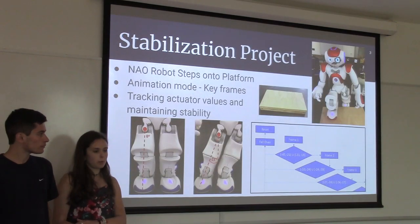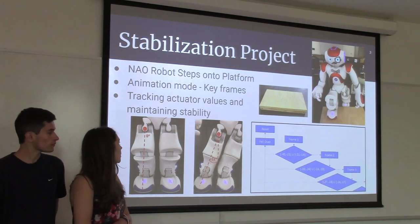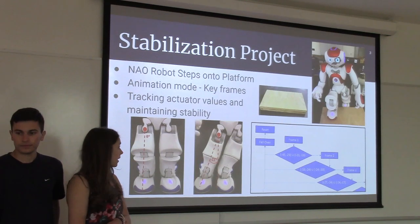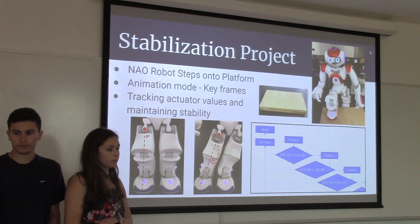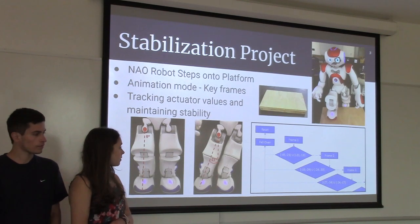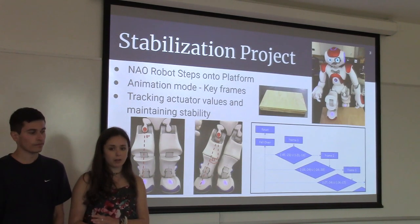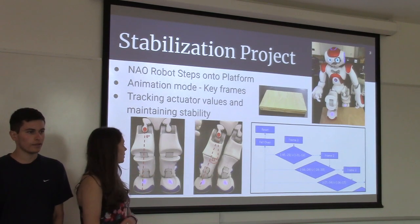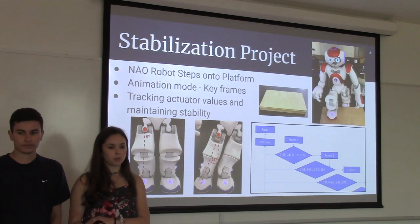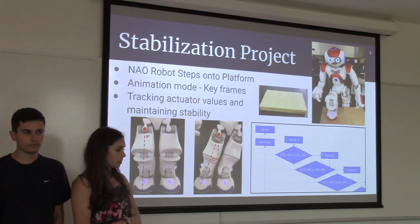We have two parts to our project. The part I'm leading is the stabilization part, where we are making the NAO robot climb onto a platform. We did this using QueryGraph, which is the NAO programming system. In QueryGraph there's a feature called animation mode in which you can manipulate the joints of the NAO robot. Using this, we designed ten key frames that were blended together to make the NAO robot successfully climb onto the platform.